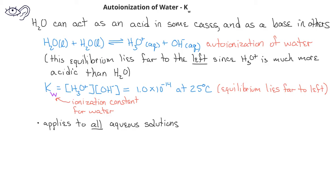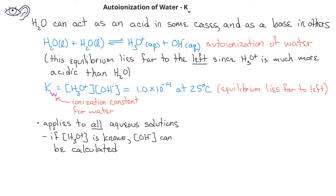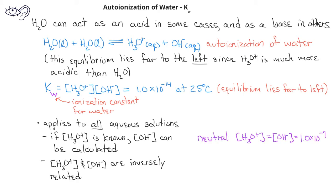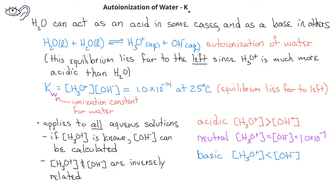Since Kw applies to all aqueous solutions, if we know the hydronium ion concentration we can calculate the hydroxide ion concentration and vice versa. Furthermore, this indicates that the hydronium ion concentration is inversely related to the hydroxide ion concentration. In neutral solutions, the hydronium ion concentration is equal to the hydroxide ion concentration. In acidic solutions, the hydronium ion concentration is greater than the hydroxide ion concentration. The inverse is true in basic solutions, where the hydronium ion concentration is less than the concentration of the hydroxide ion.